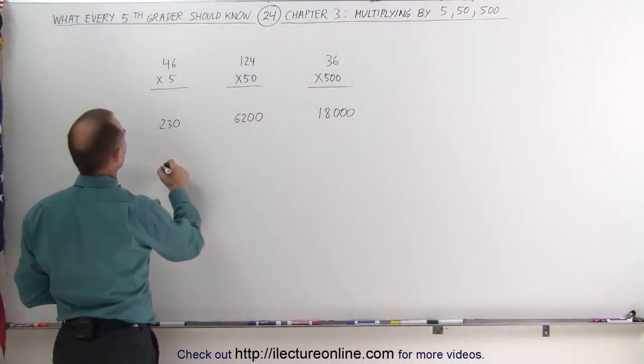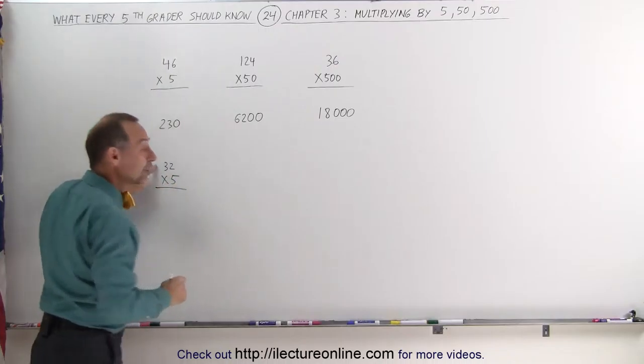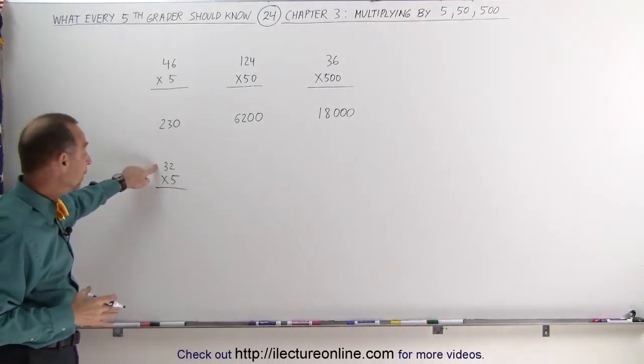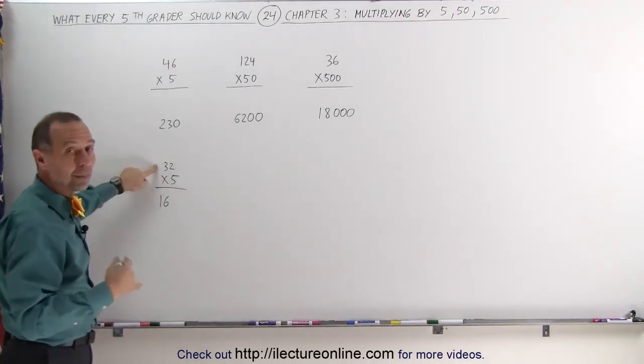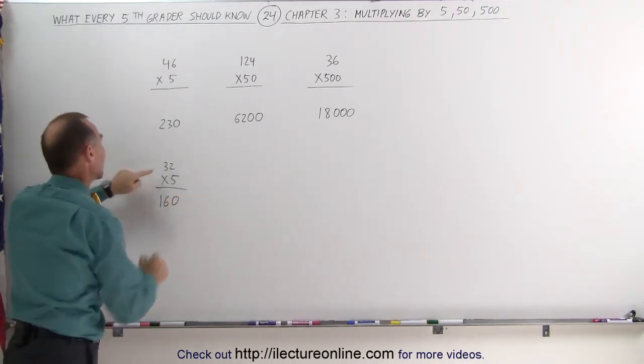Let's say the number, how about 32 times 5. So I take 32 and divide by 2. Half of 32 is 16. And then add one more zero because now I'm multiplying times 10, and I get 160.